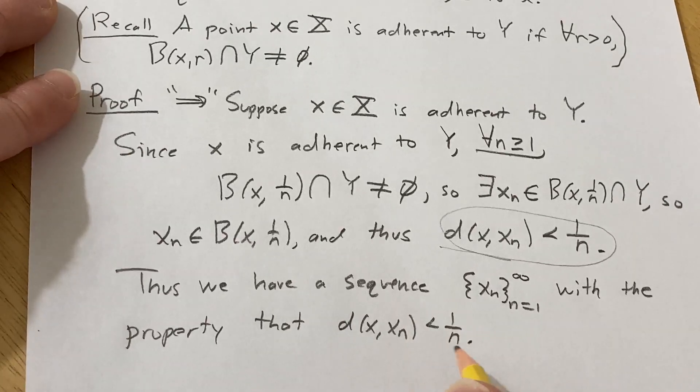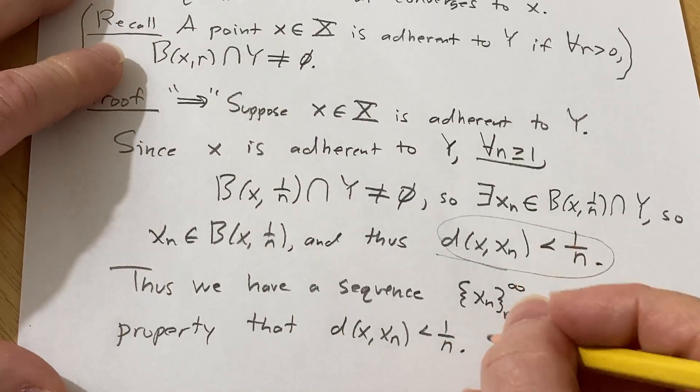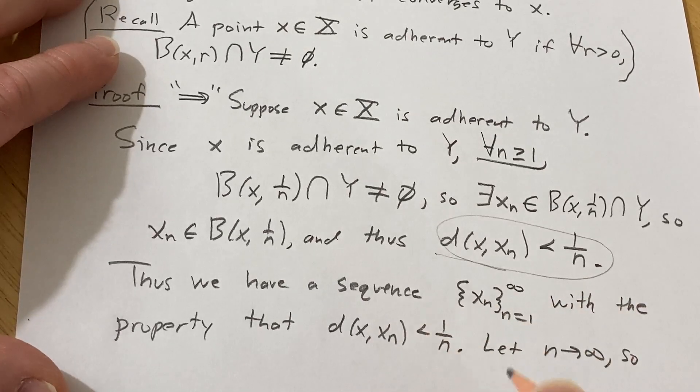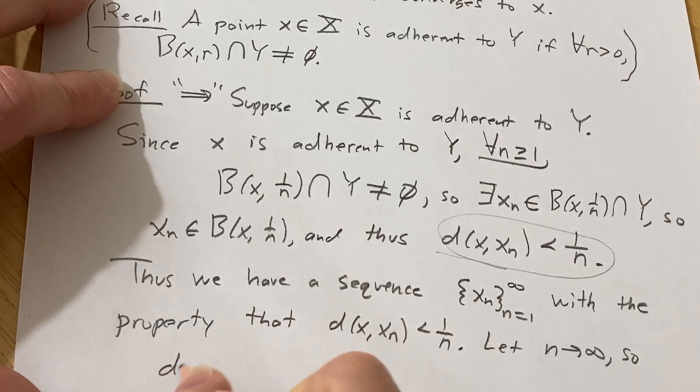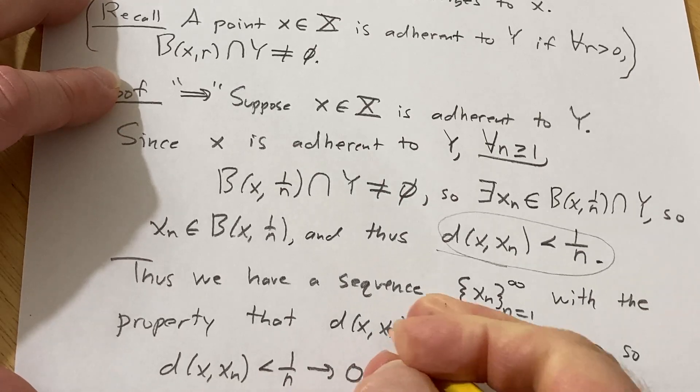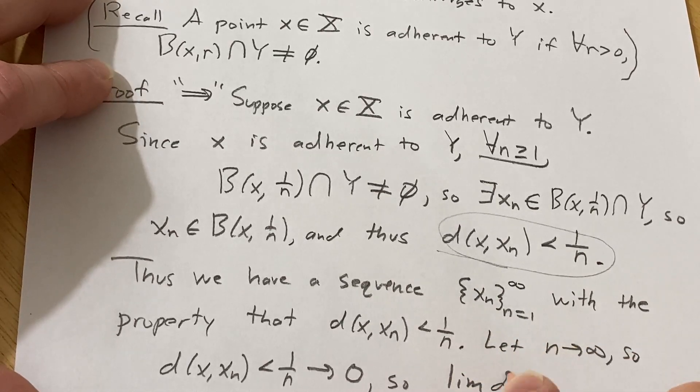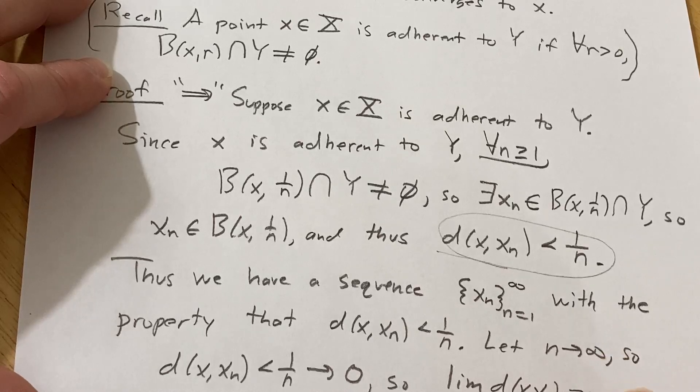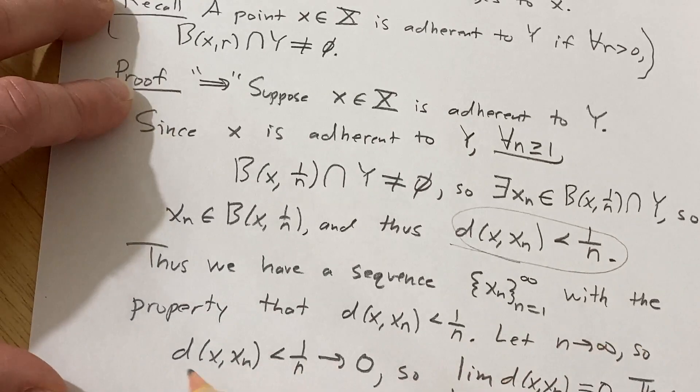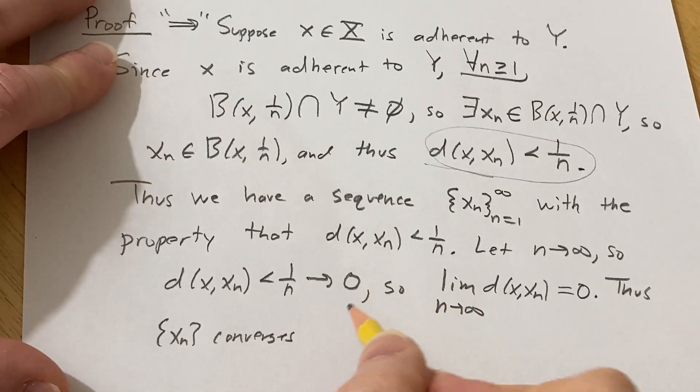Well, clearly this sequence converges to x because if we let N go to infinity, we basically get that this is less than 0, so this must approach 0. So let N approach infinity. So we end up with d(x, x sub N) less than 1 over N approaching 0. So that means that the limit as N approaches infinity of the distance between x and x sub N is equal to 0. And so that means that x sub N converges to x.